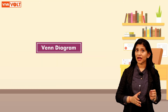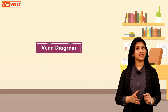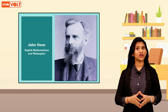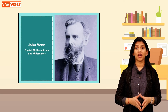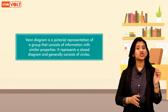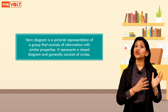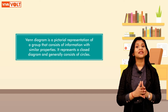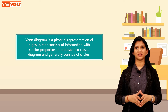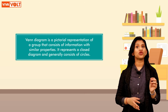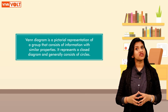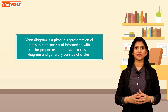Venn Diagram was invented by English mathematician and philosopher John Venn. A Venn Diagram is a pictorial representation of a group that consists of information with similar properties. It represents a closed diagram and generally consists of circles.